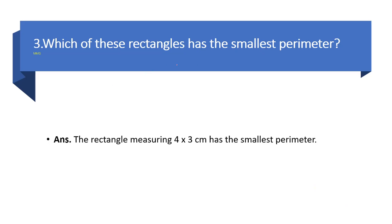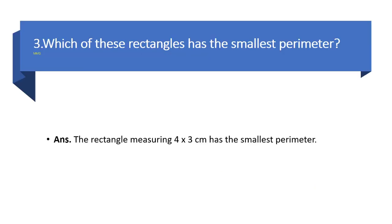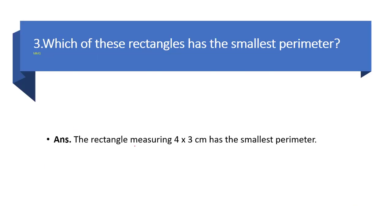Now, which of these rectangles has the smallest perimeter? The rectangle measuring 4 into 3 cm has the smallest perimeter, which is 14 cm.